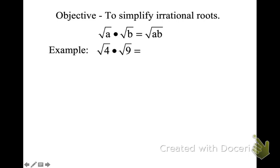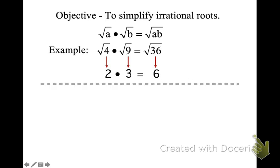So if we have radical 4 times radical 9, there are a couple different things we can do. We can multiply them under the radical — it still equals √36 — and the square root of 36 is 6. Or we can take the result of √4, which is 2, and the result of √9, which is 3, and get the same answer. So it doesn't matter how you do it. There's more than one way to get there.